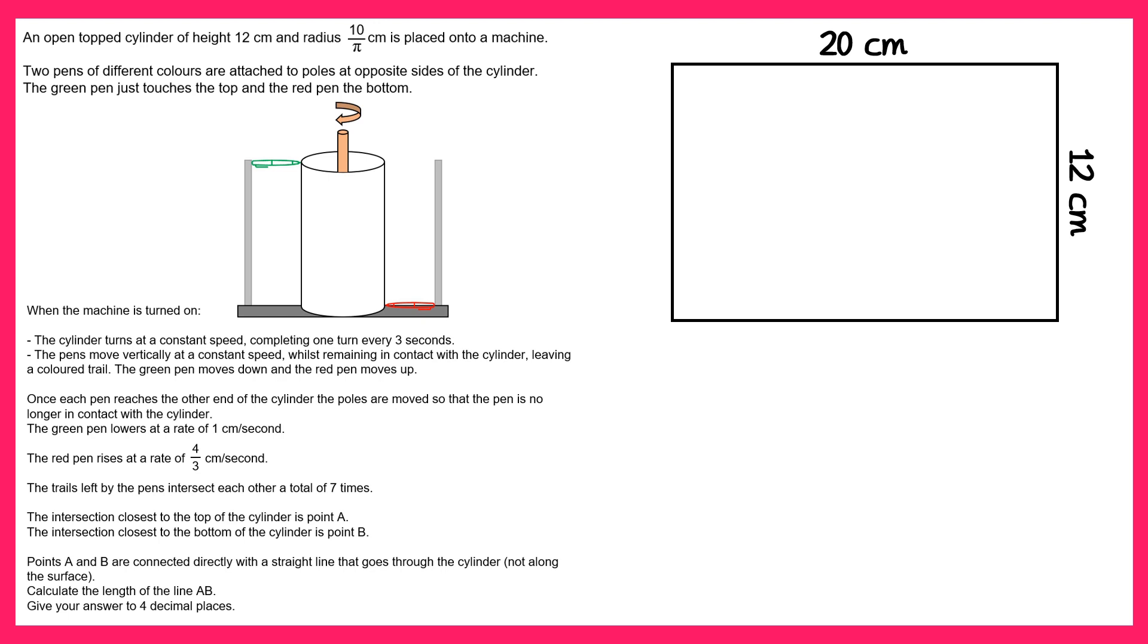Next we're told some information about the cylinder. We know it spins at a constant speed completing one turn every three seconds and also that these two pens are going to leave trails. The green pen is going to lower at a rate of one centimeter per second but the red pen is going to rise at four thirds of a centimeter per second.